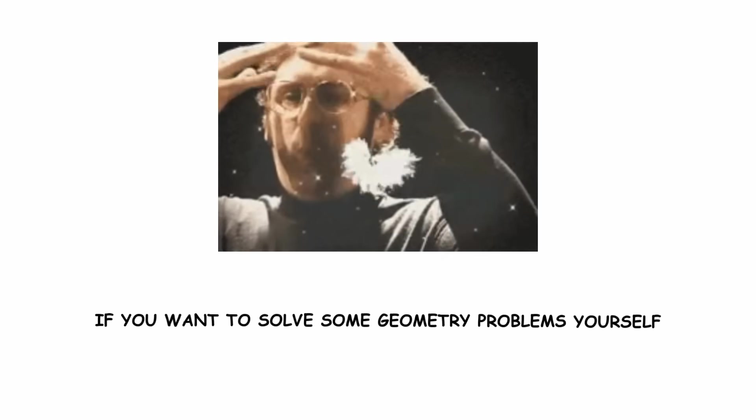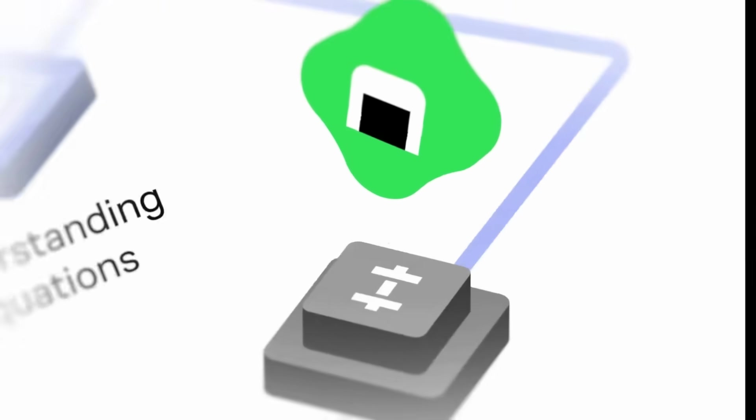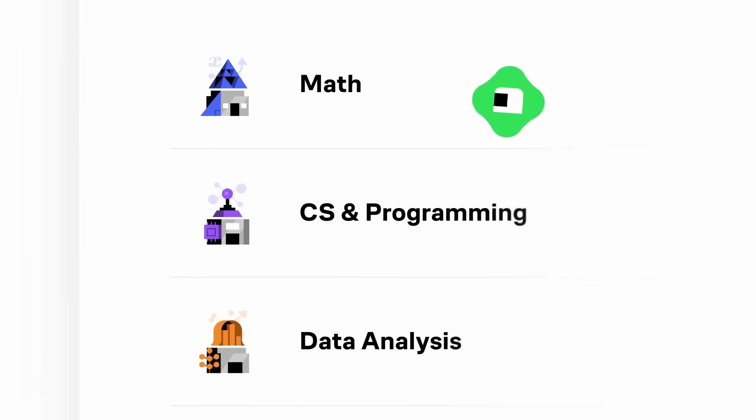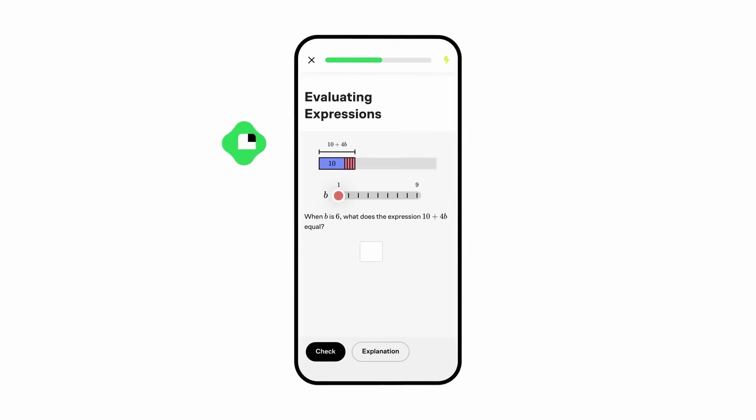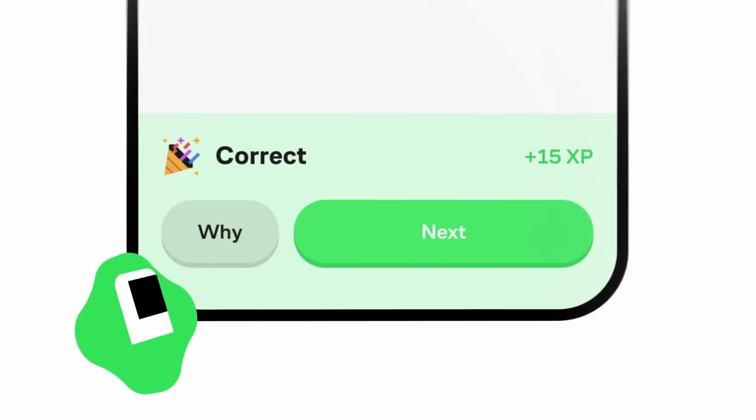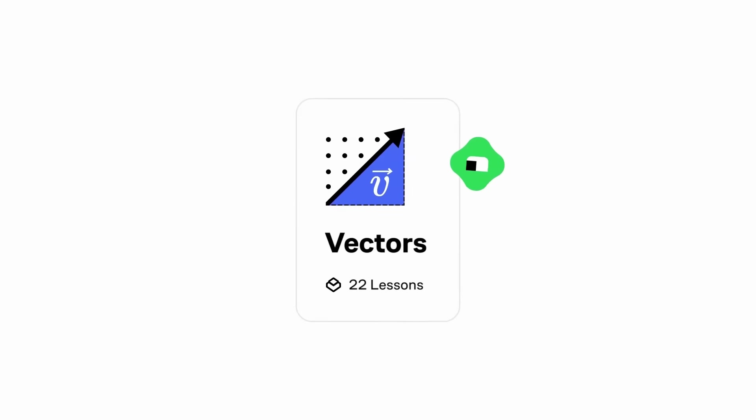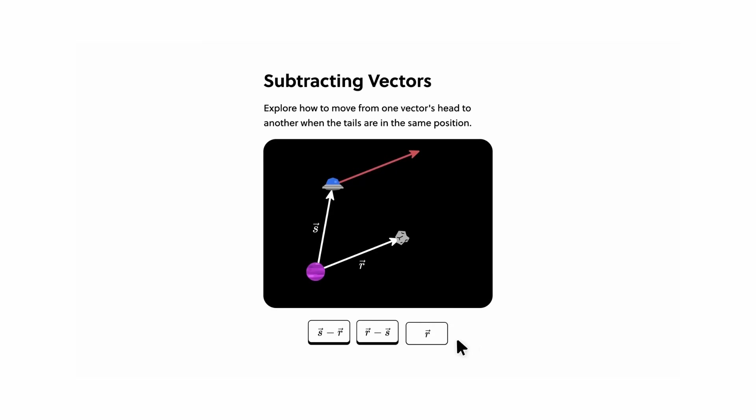If you want to solve some geometry problems yourself, then Brilliant is a great place to start. Brilliant is a learning platform that focuses on interactive learning. Experience thousands of hands-on lessons in math, data analysis, programming, and AI. This approach has been shown to be six times as effective as lecture videos, and with each lesson building your way up from first principles, you'll gain a thorough understanding of every subject you study.